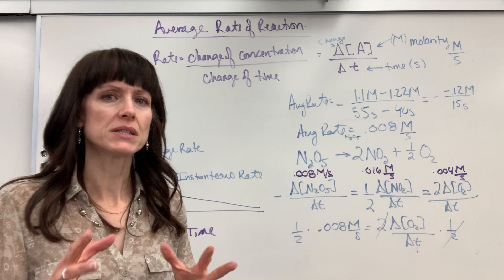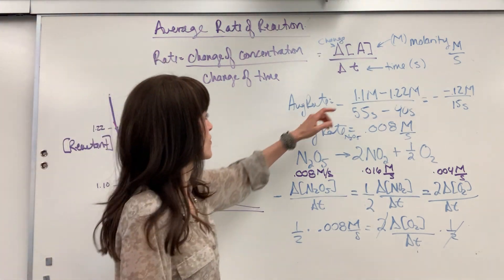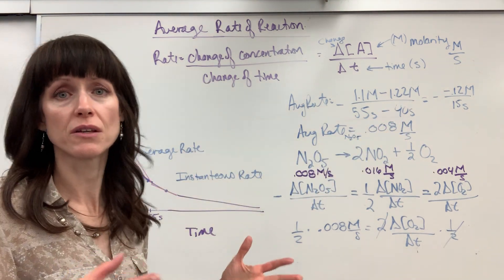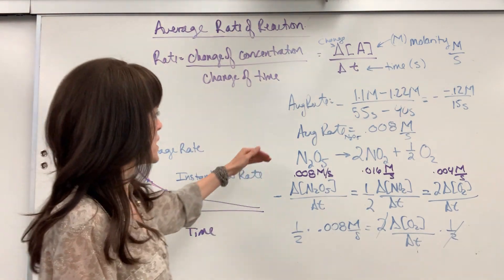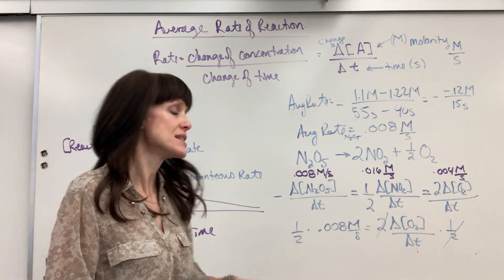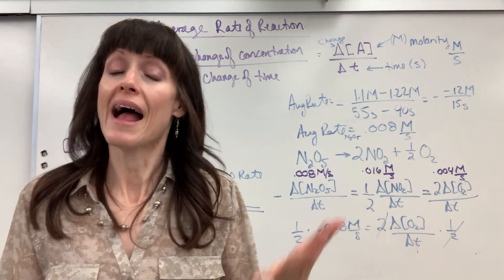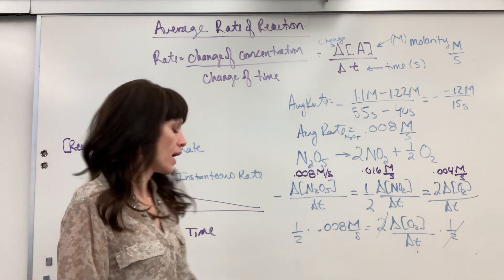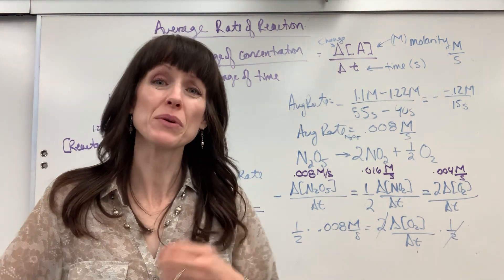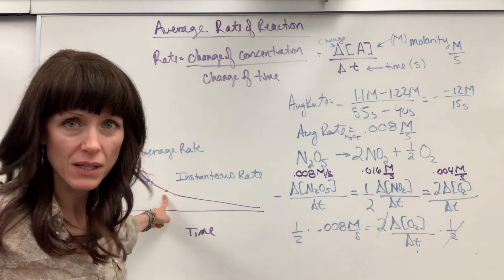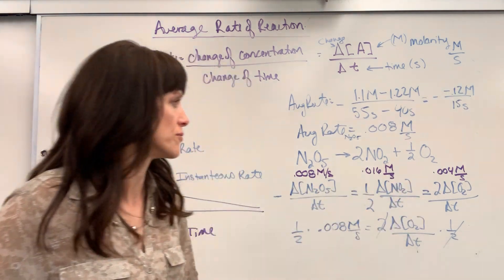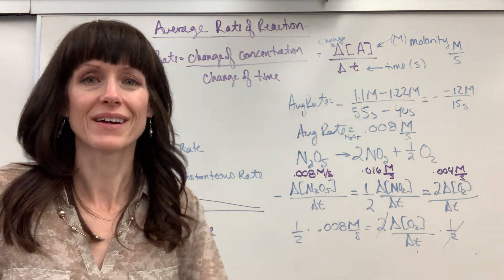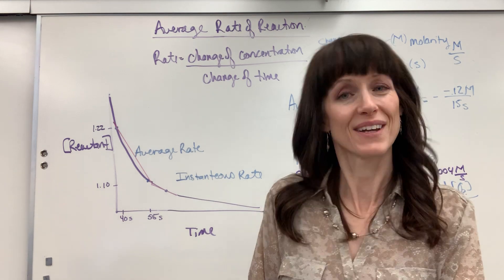Two big takeaways from this video. Number one: to find average rate, you do final concentration minus initial concentration divided by final time minus initial time — you can read that graphically or a problem may give you all four numbers. Second big takeaway: once you know the rate of any one species, set those rates equal to each other with the coefficient reciprocated, and you can find the rate of everything else in that reaction. As an extension, if you're given the instantaneous rate, you can also use the reciprocal coefficient method for average or instantaneous rates.